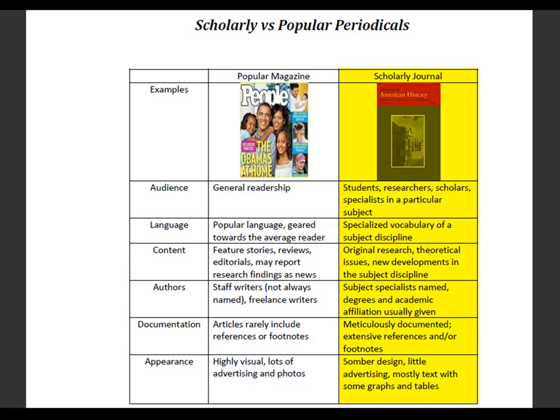Conversely, scholarly journals are intended for students and researchers, will include a subject-specific vocabulary, and are meticulously documented.